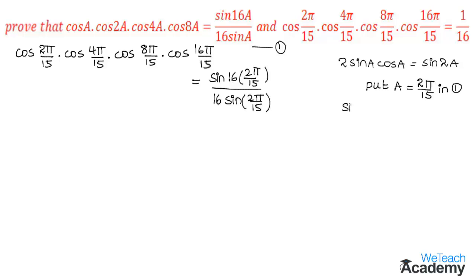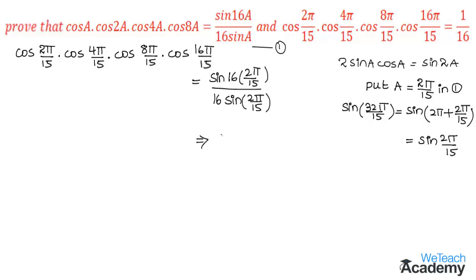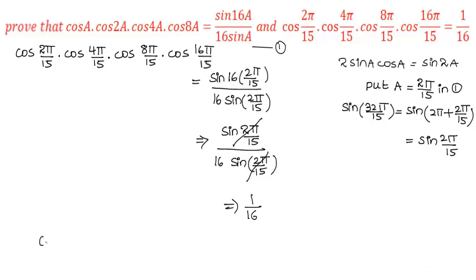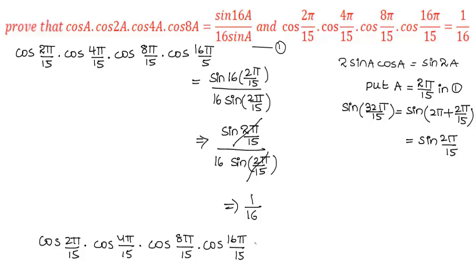In the numerator we get sin(32π/15). Now sin(32π/15) = sin(2π + 2π/15). This is in the form sin(360° + θ) = sin θ, so we get sin(2π/15) as the value in the numerator. Therefore we have sin(2π/15) / (16 · sin(2π/15)). Since sin(2π/15) in the numerator and denominator cancels, we get 1/16. Therefore cos(2π/15) · cos(4π/15) · cos(8π/15) · cos(16π/15) = 1/16.